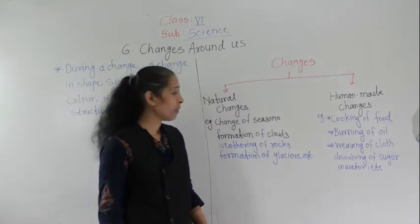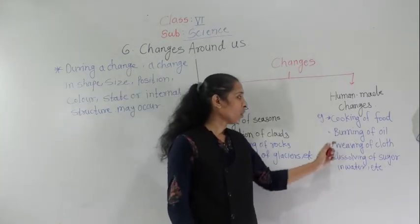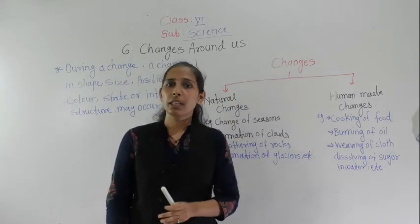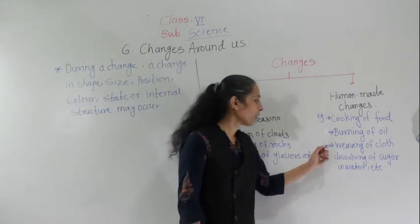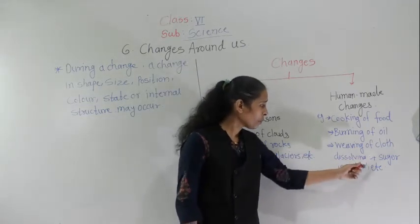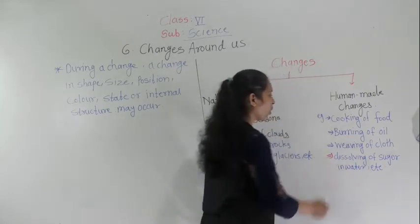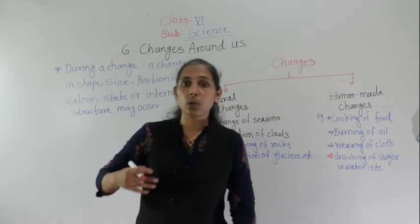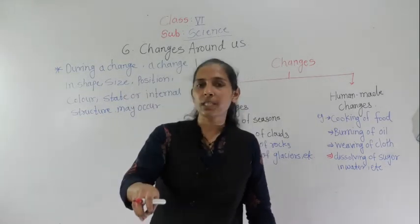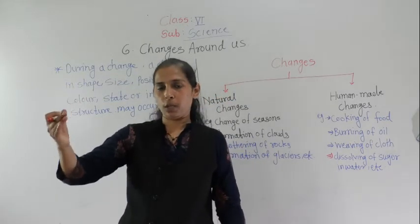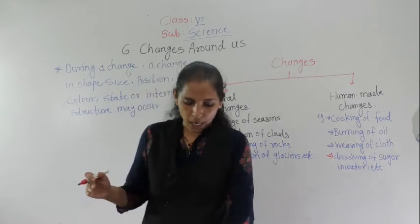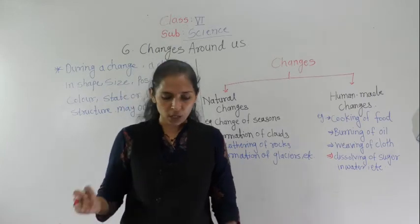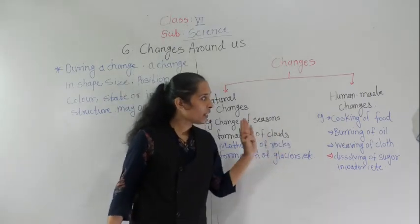There are also so many examples of human-made changes. Cooking of food, burning of oil, burning of fuel, burning of coal, burning of food — everything is a human-made change. Next, weaving of clothing, dissolving of sugar in water — these are also human-made changes. Growing of crops: if we sow seeds into the soil, then only the crops will grow. So growing of crops and production of food grains are also human-made changes.